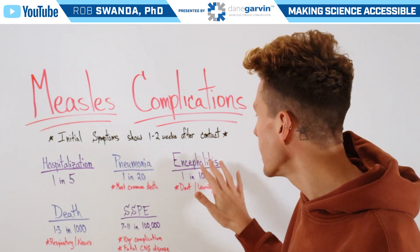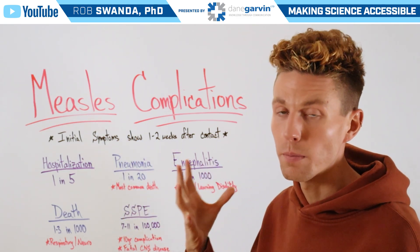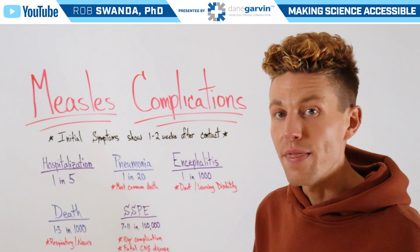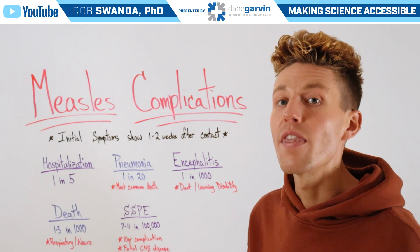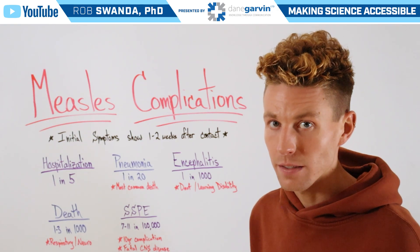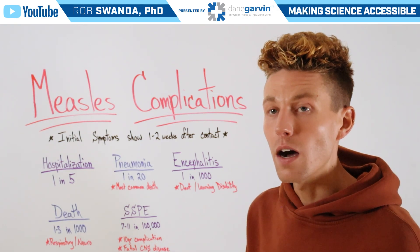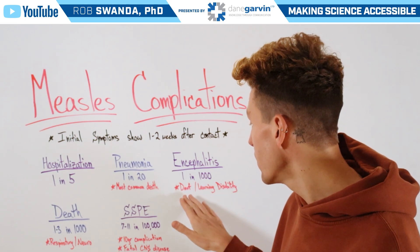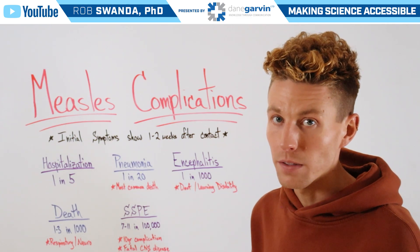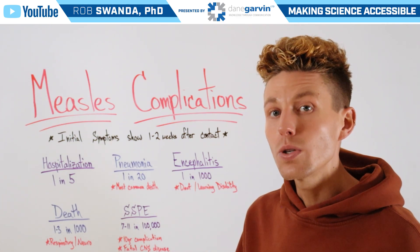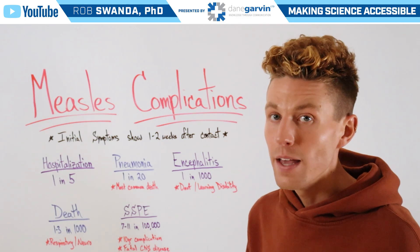Next would be encephalitis, which is swelling of the brain, and that occurs in every 1 out of 1,000 cases. It is also the leading cause of deafness as well as learning disability in those who are infected with the measles virus.